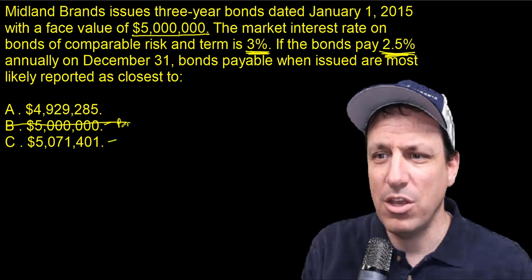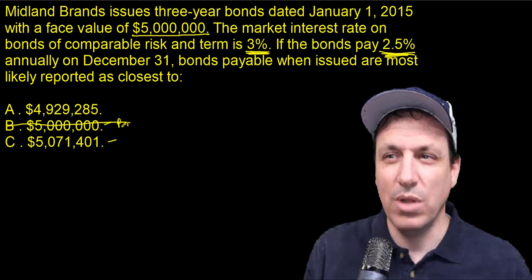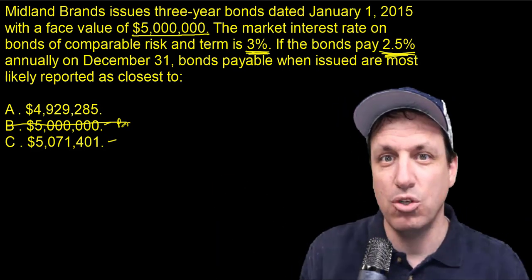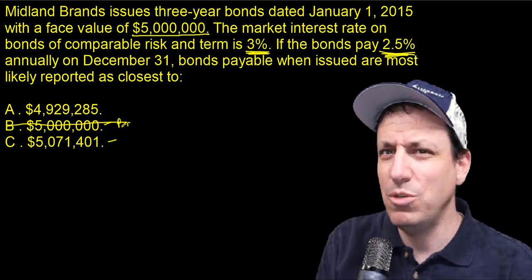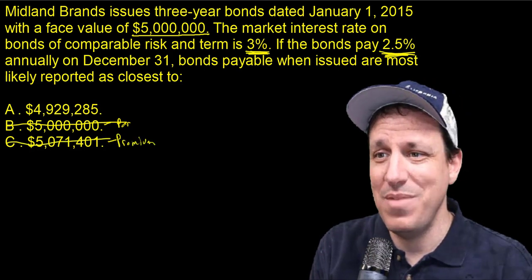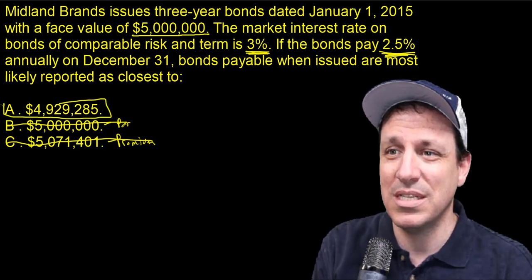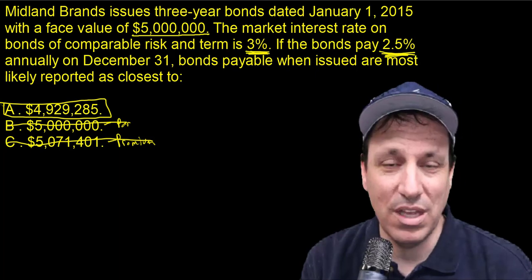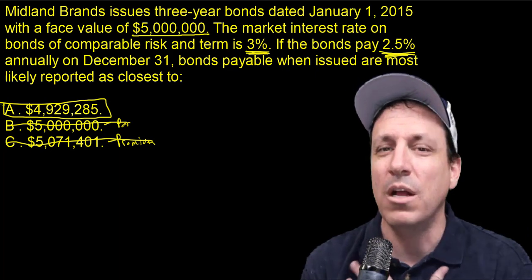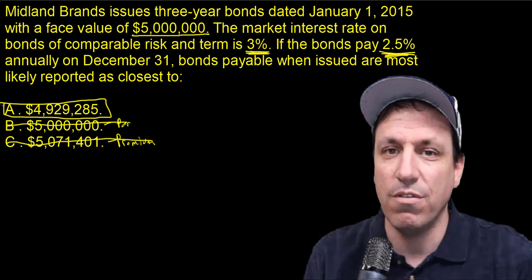A premium means people are paying more for the bond. But why would you pay more for something paying you less than alternatives? You could buy other bonds paying 3%, and this one is only paying 2.5% — you wouldn't buy it at a premium. So this is not a bond issued at a premium. We know the answer is A. Just know this and move on — don't waste your time with the calculator.